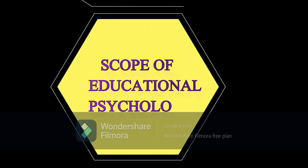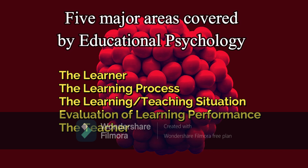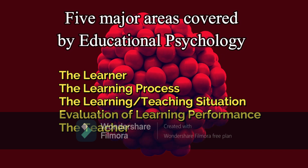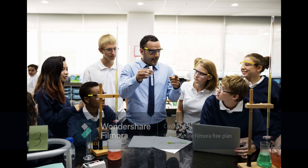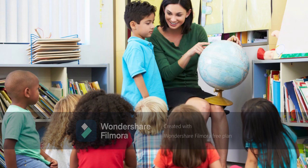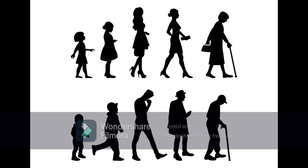The five major areas covered by educational psychology are: the learner, the learning process, the learning situation, the teaching situation, and evaluation of learning performance. Regarding the learner, educational psychology acquaints us with the need of knowing the learner and deals with the techniques of knowing him well, including the innate abilities and capabilities of the individual and their measurements; the overt, covert, conscious as well as unconscious behavior of the learner; and the characteristics of his growth and development at each stage from childhood to adulthood.